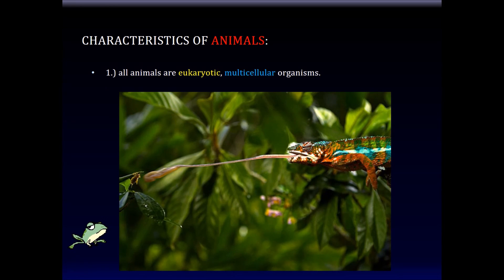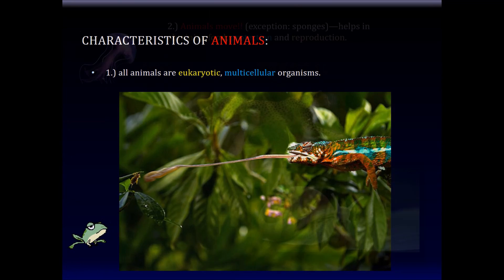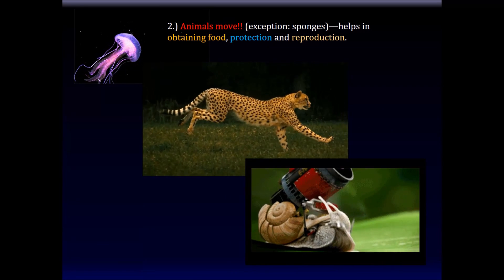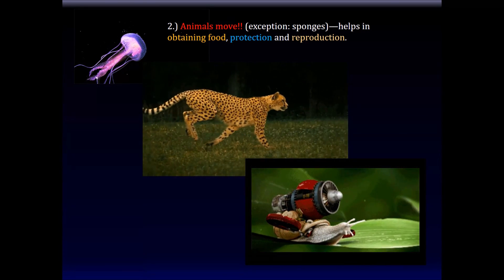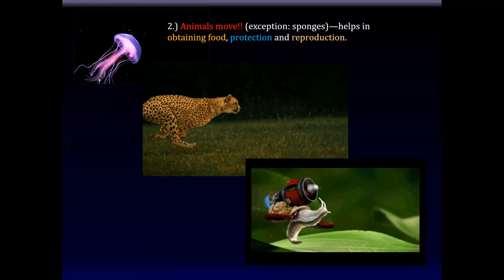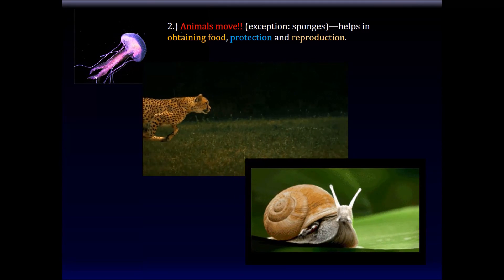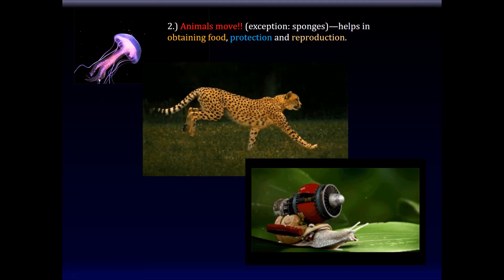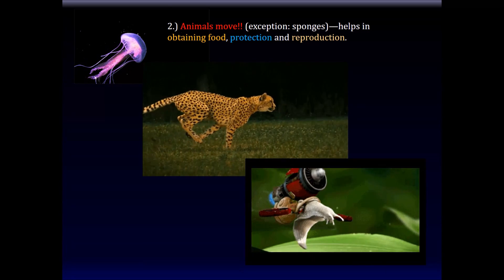First, all animals are eukaryotes and all animals are multicellular by definition. There are no prokaryotes and there are no unicellular animals — animals are by definition eukaryotic and multicellular. Second, animals move; even a jellyfish and a cheetah, and some have adopted quite amazing ways of locomotion. Animals are mobile living creatures.